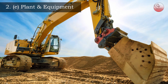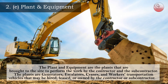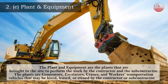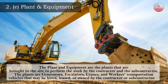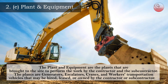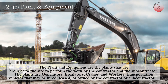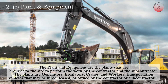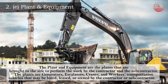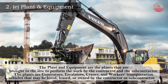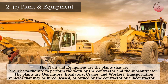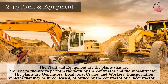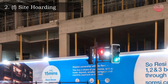E) Plant and Equipment. Plant and equipment are the plants that are brought to the site to perform the work by the contractor and the subcontractor. The plants include generators, excavators, cranes, and workers' transportation vehicles that may be hired, leased, or owned by the contractor or subcontractor.